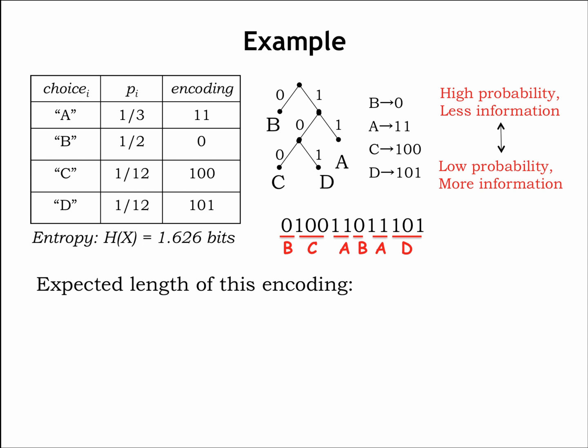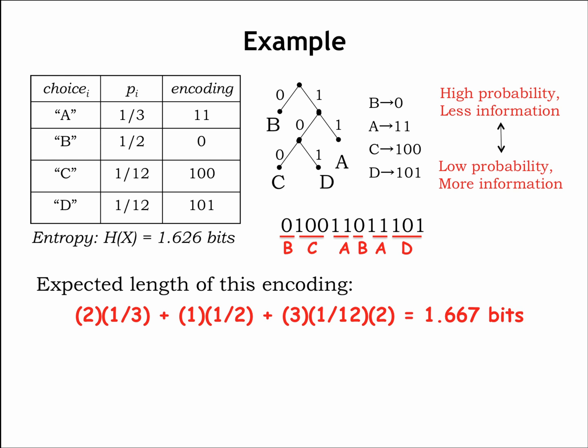The expected length of this encoding is easy to compute. The length of A's encoding, 2 bits, times its probability, plus the length of B's encoding, 1 bit, times a half, plus the contributions for C and D, each 3 times 1 twelfth. This adds up to 1 and 2 thirds bits.